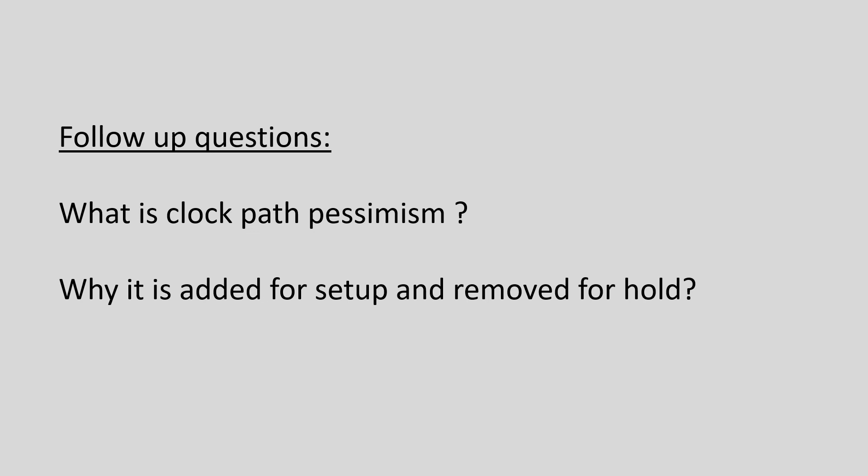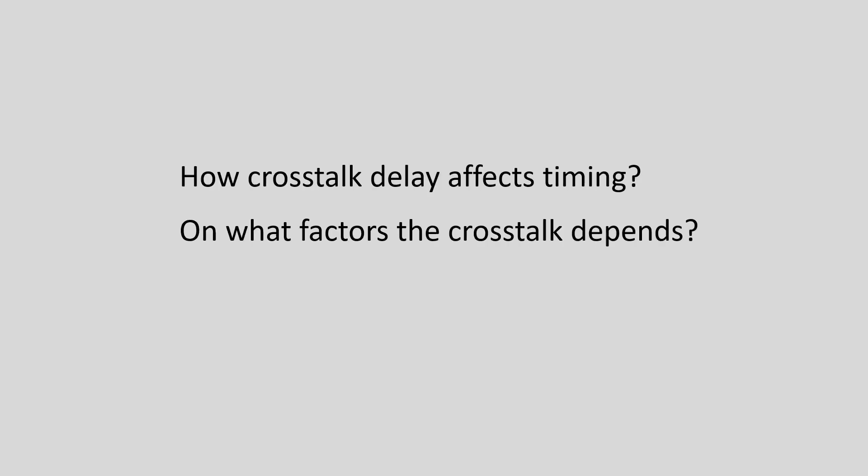Moving to the next question: can you explain how crosstalk delay affects timing? I explained how the signal transition on the aggressor affects the victim. If the signals on both the aggressor and victim are switching in the same direction, then the signal on the victim will switch quickly, which can cause a hold violation. While if both are switching in the opposite direction, the aggressor will slow the signal transition on the victim and may lead to a setup violation. On what factors does crosstalk depend? My response was: the amount of cross-coupled capacitance, slew rates of the signal transitions, and switching direction. I was also asked about crosstalk noise and what role it plays.